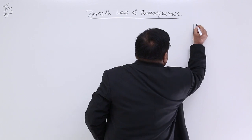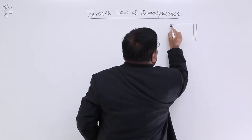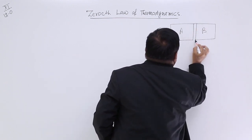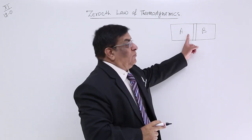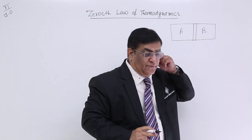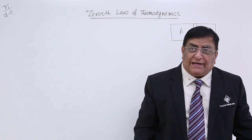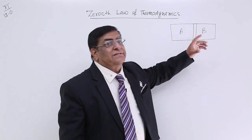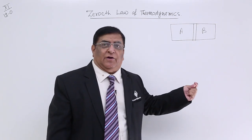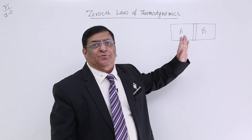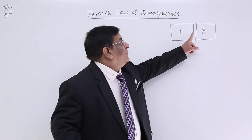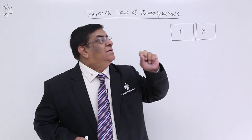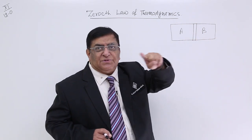Here is a wall — system A on one side and system B on the other. The energy of A will go to B or the energy of B will go to A depending on whether this wall is diathermic or adiabatic. Suppose this is a diathermic wall which allows heat to pass through. Heat will pass from A to B, and after some time we find that the transmission of heat stops.